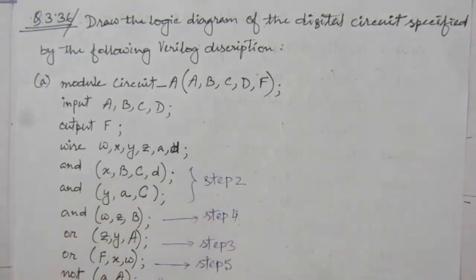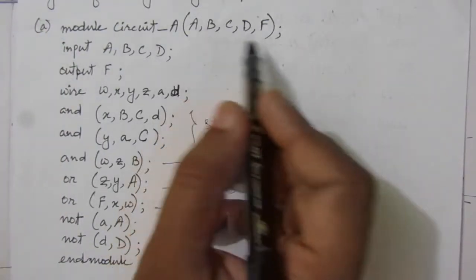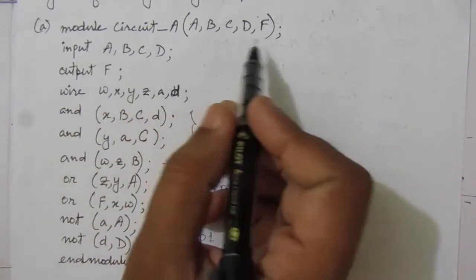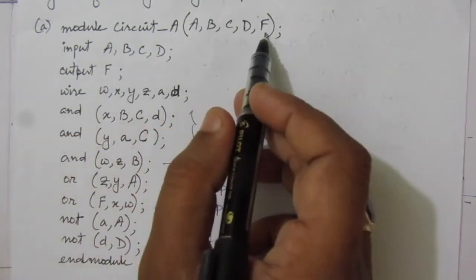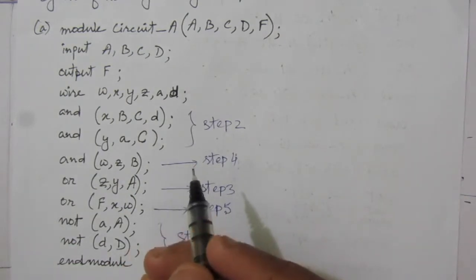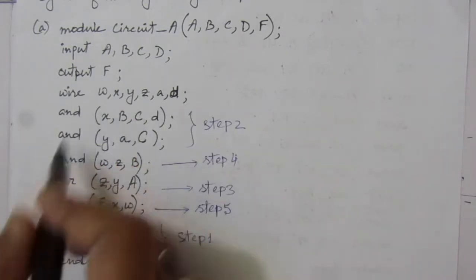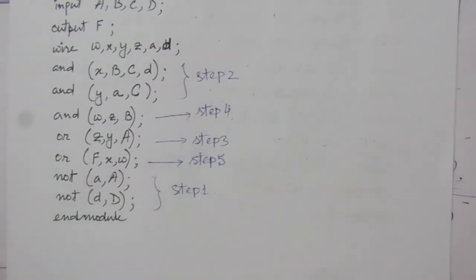We are given three Verilog gate-level description codes and from that we have to draw the digital circuit. The first Verilog gate-level description code has ports a, b, c, d, and f. The inputs are a, b, c, and d, and the output is f. We have made the declaration of the input and output ports, and the wires are w, x, y, z, small a, and small d.